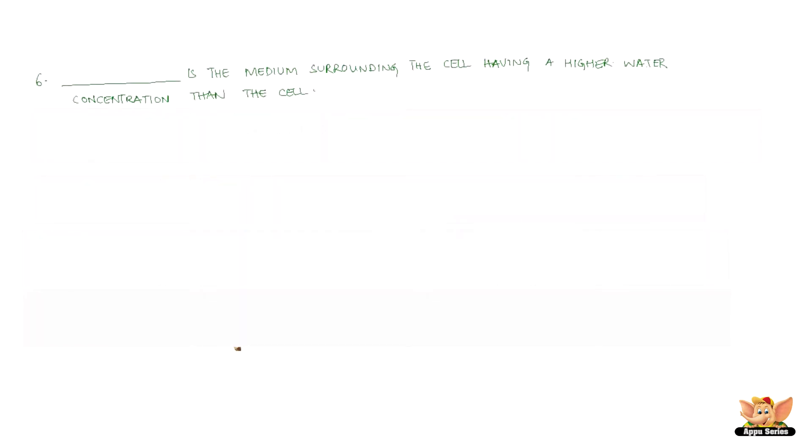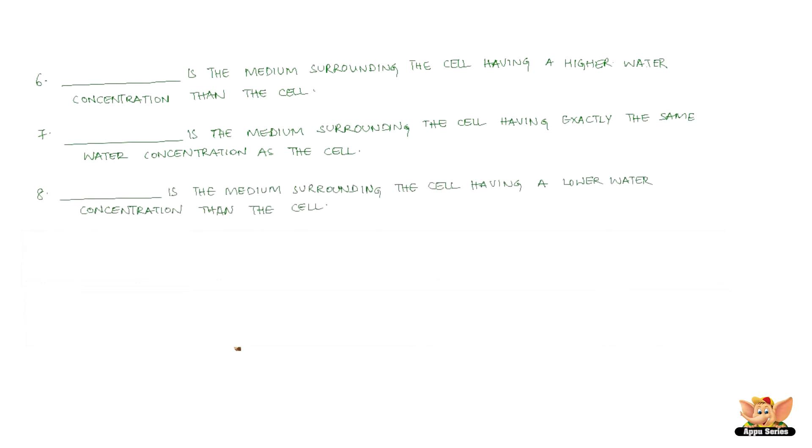Dash is the medium surrounding the cell having a higher water concentration than the cell. Dash is the medium surrounding the cell having exactly the same water concentration as the cell. Dash is the medium surrounding the cell having a lower water concentration than the cell.